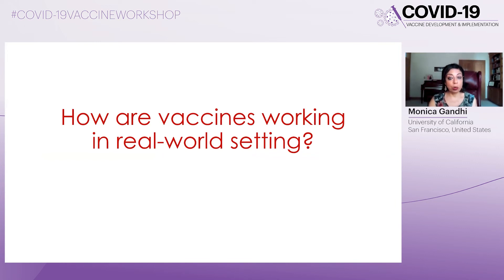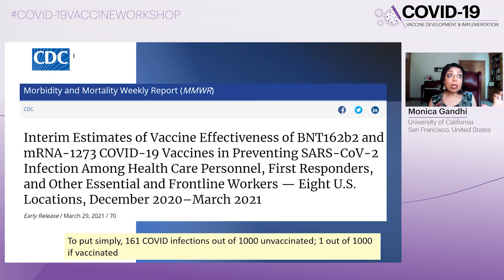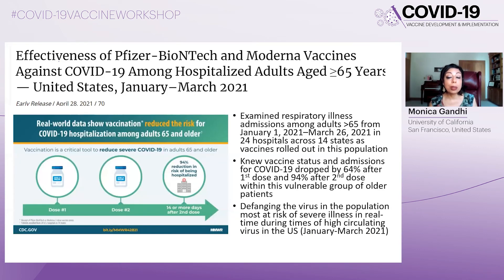How are vaccines working in real-world settings? A CDC study across the United States from December to March 2021, with circulating virus still present, showed that among first-line responders and healthcare workers, there was a massive reduction in COVID-19 acquisition after vaccination: 161 infections among unvaccinated compared to just one in 1,000 for vaccinated. A separate CDC study shows equal effectiveness in older patients, with 94% protection from hospitalization among those over 65. A Lancet study from the Israeli campaign from January 24 to April 3 showed the Pfizer vaccine was 95% effective for symptomatic COVID, 98% against hospitalization, 97% against death, and 92% effective against asymptomatic infection.